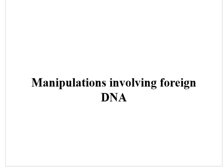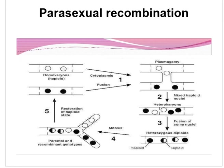The technique we are going to discuss today — manipulation involving foreign DNA — is sexual recombination in parasexual recombination. First, we will discuss what is parasexual recombination. In some fungi, the true sexual cycle comprising nuclear fusion and meiosis is absent. These fungi derive the benefits of sexuality through a cycle known as the parasexual cycle, and the recombination that takes place by this cycle is known as parasexual recombination.